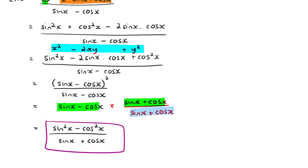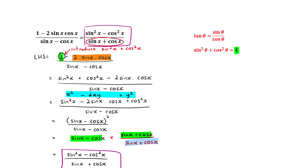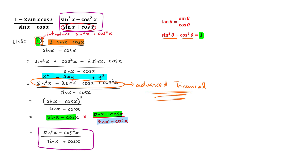And that is exactly what we had on the right-hand side. To summarize: we changed the 1 to sin squared plus cos squared, factorized the numerator using an advanced trinomial, cancelled to get sin x minus cos x, then multiplied by the factor of 1 to introduce the correct denominator and numerator. By multiplying by 1, we got our final result matching the right-hand side.